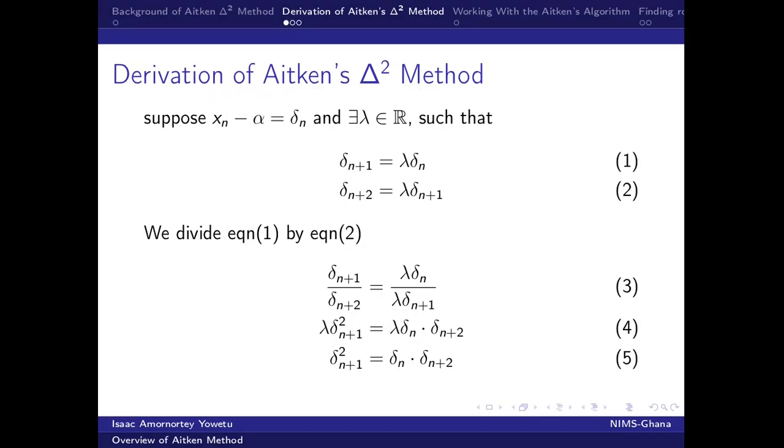How then do you derive this Aitken's delta square method? Suppose we have an approximate value xn minus alpha equal to delta n. And there exists a certain scalar lambda belonging to a set of real numbers such that lambda times delta n will give us delta n plus 1, and delta n plus 1 is the same as xn plus 1 minus alpha. When we multiply the scalar by delta n plus 1, we have delta n plus 2.